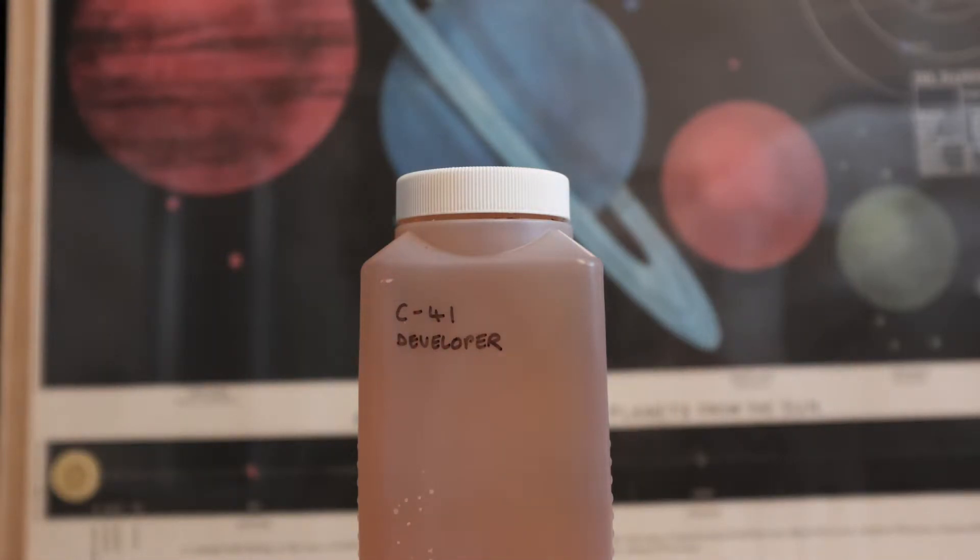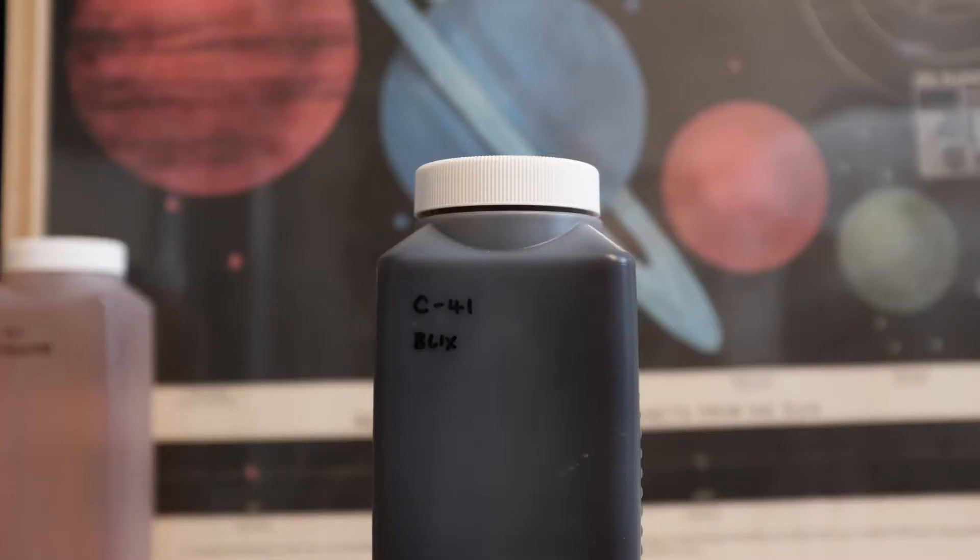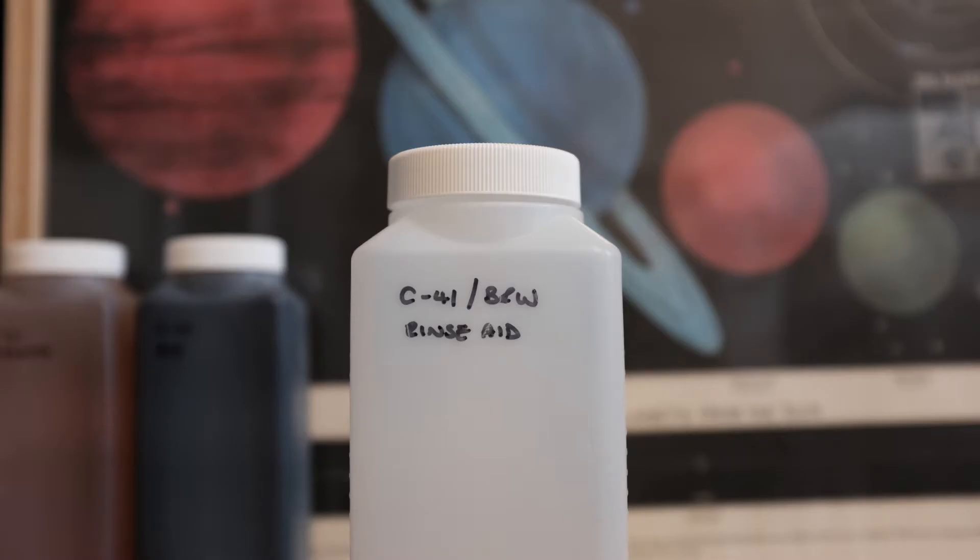Talking now through what you'll need to actually do the developing. First is the C41 developer we've just created, which is this lovely orange color. Next you'll need the blix, made from the remaining two packages, which is a very dark black-brown color. This next chemical is optional but I like to use a bit of rinse aid, which stops streaks developing on your negatives when they dry. Not essential but very helpful and saves time when scanning.